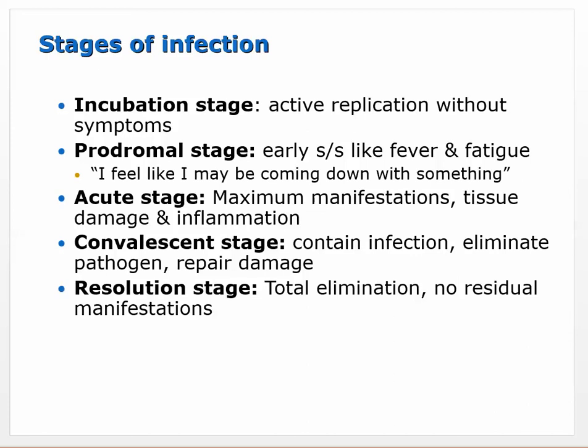Stages of infection: incubation, prodromal, acute, convalescent, and resolution. During incubation there are no symptoms - a virus is replicating, moving into cells, and the immune system hasn't gotten control yet. As there's more cell death, the immune system notices, and that moves toward the prodromal stage - early signs and symptoms like fever, which signals a systemic infection as immune cells release pyrogens.